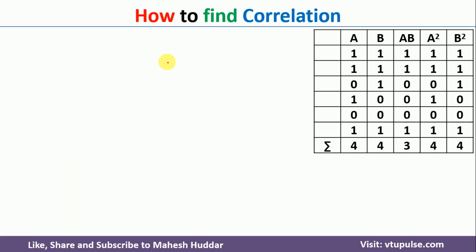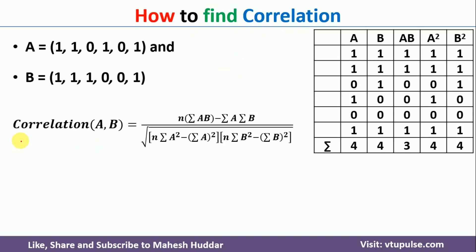Similarly, we can find the correlation between these data points. The equation for correlation is N multiplied by summation of AB minus summation of A times summation of B, divided by the square root of N times summation of A squared minus summation of A bracket squared, multiplied by N times summation of B squared minus summation of B bracket squared. N is the number of data points in A and B.